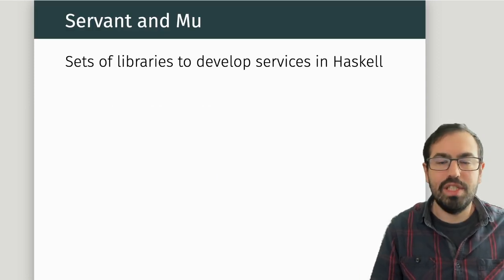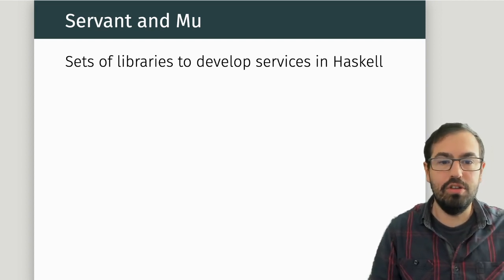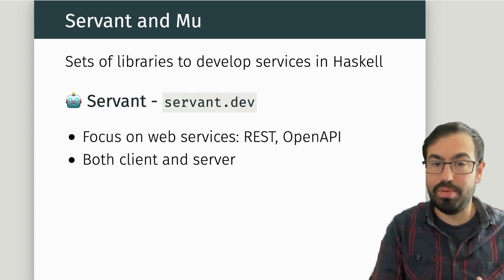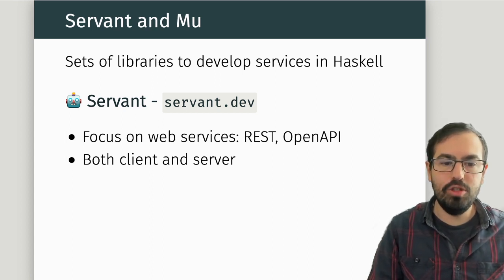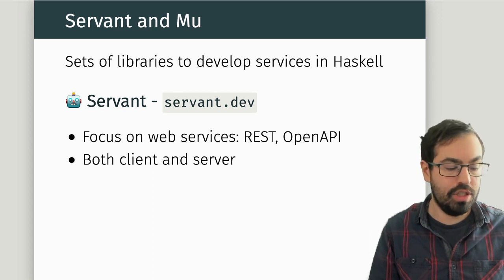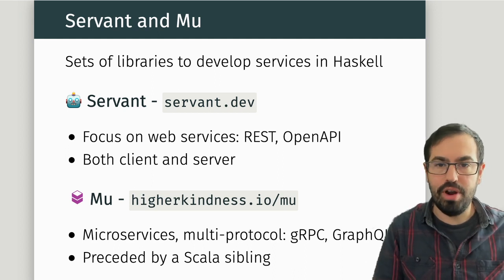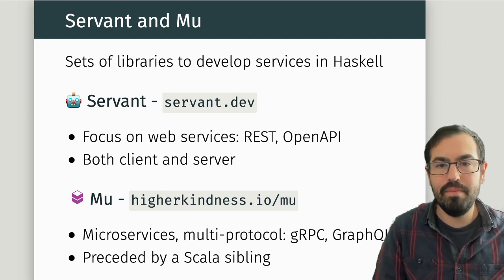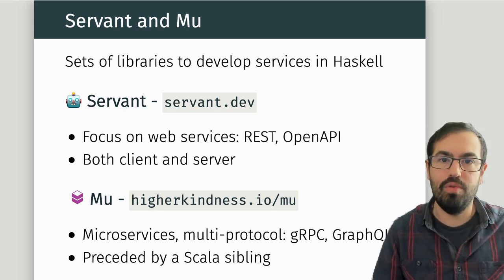Just to give some context, what are Servant and Mu? They are two sets of libraries to develop services in Haskell. Servant focuses more on the web services space — REST, OpenAPI — and it allows you to generate both client and server. Mu is actually part of a broader ecosystem, which includes a Scala library and also a Kotlin one in development, and focuses more on protocols usually used in internal microservices like gRPC and also GraphQL.